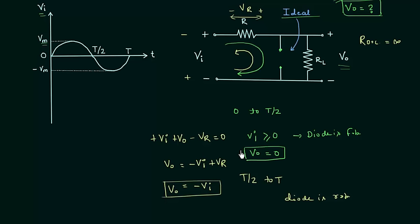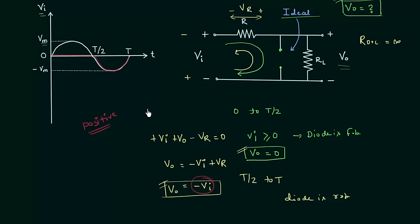Now we have the output voltage values for both half cycles. For the positive half cycle Vo = 0, so we have 0 volts. For the negative half cycle Vo = −Vi, so the output waveform follows the input. This clipper circuit is a positive clipper because we have clipped the positive portion of the waveform. I hope the unbiased parallel clipper is clear. If you have any doubt, you may ask in the comment section. See you in the next one.